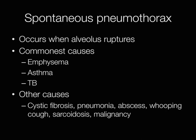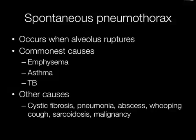Spontaneous pneumothorax occurs when an alveola ruptures. The three commonest causes are emphysema, asthma, and TB. Other causes include cystic fibrosis, pneumonia, abscess formation, whooping cough, sarcoidosis, and malignancy.